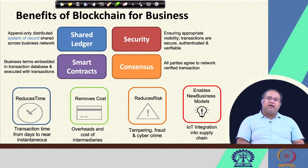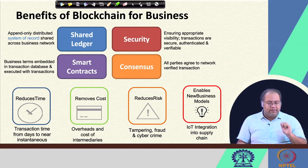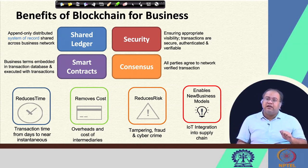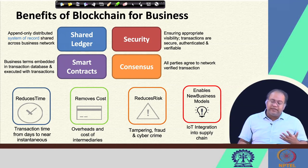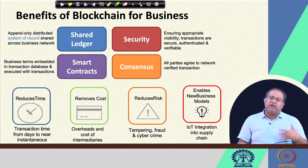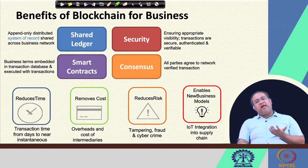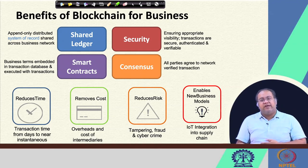Looking at the benefits of applying blockchain for business, there are four fundamental core elements: the shared or distributed ledger, the smart contract, the security properties provided by the blockchain architecture, and the consensus algorithms that ensure every party reaches a common agreement. The shared ledger is an append-only distributed system of record shared across the business network, ensuring everyone has and maintains the information locally — so there is no question about who keeps or maintains the information.